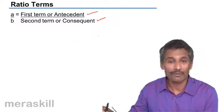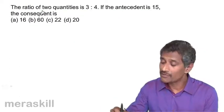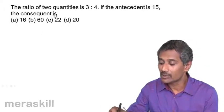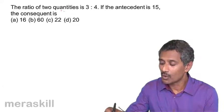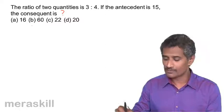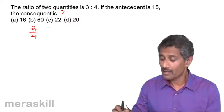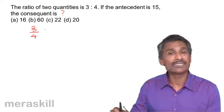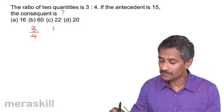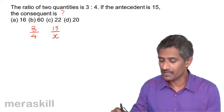Let's take this example. Ratio of two quantities is 3 is to 4. If the antecedent is 15, the consequent is what? We need to find out. The ratio of two quantities is 3 upon 4, so we could take them as 3/4, and the antecedent is 15.